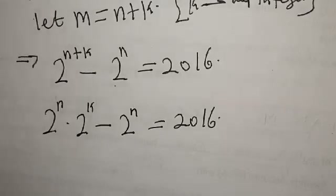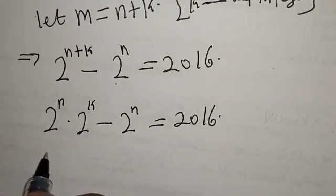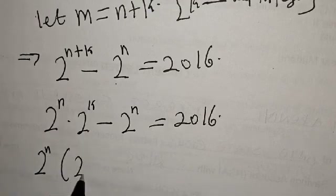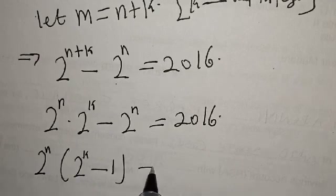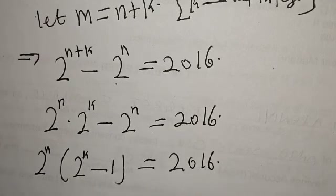Something is common — we have 2 raised to power n is common, so let's factor it out. We have 2 raised to power n into 2 raised to power k minus 1, which is equal to 2016.